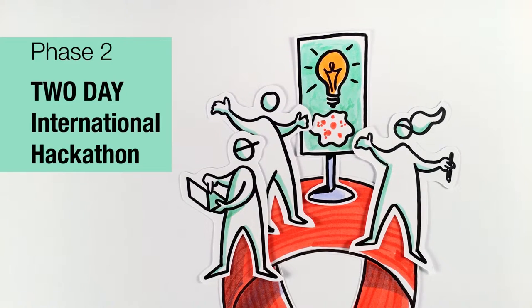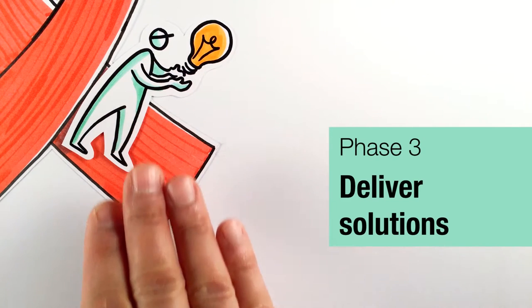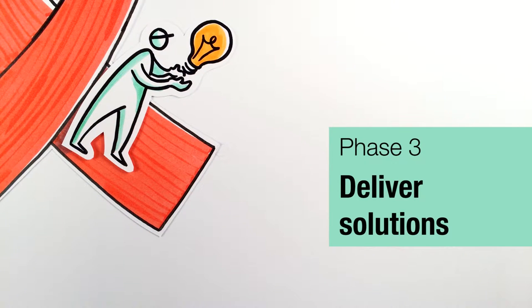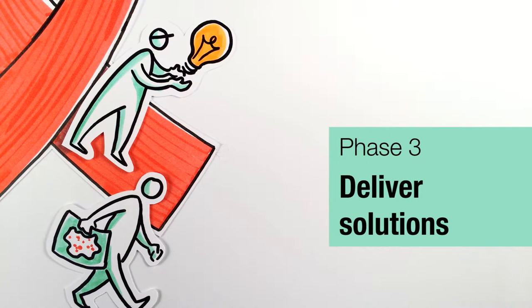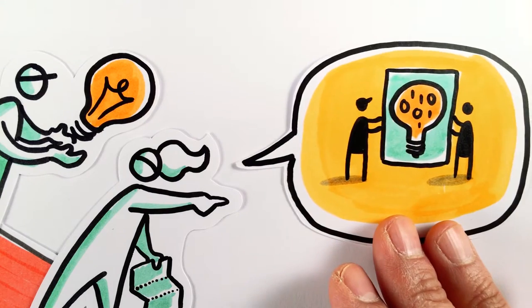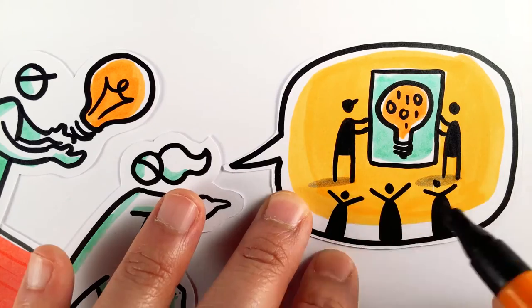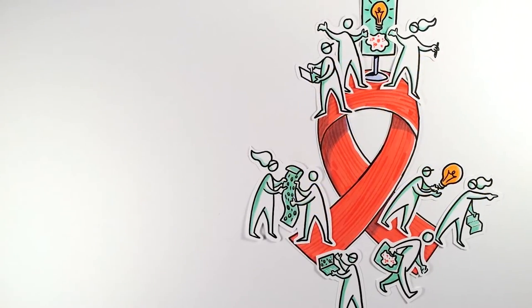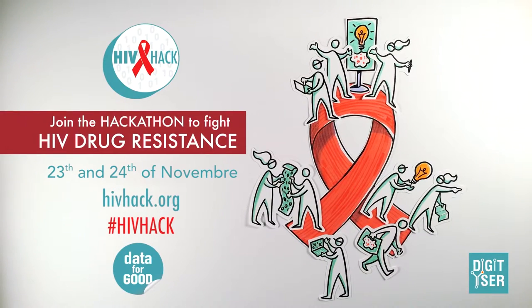But we won't stop there. Phase 3: Deliver solutions. The winning solution from the hackathon will be shared with countries struggling with HIV drug resistance. Winners will be given the opportunity to join a world-class team of researchers to coach local data experts on how to deploy the solution. The result may impact millions of people's lives. We need to act now before this problem grows and we lose control over the HIV epidemic. Join the hackathon and together we can fight HIV drug resistance.